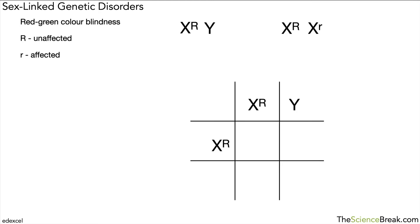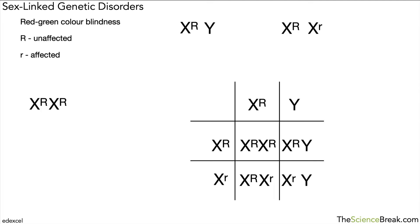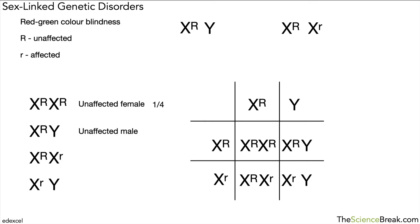The Punnett square for the second example looks like this. The four outcomes are: an unaffected female — one out of four; an unaffected male — one out of four; a carrier female — one out of four; and an unaffected male — one out of four, or 25% each. So that's a second practice at doing a genetic cross.